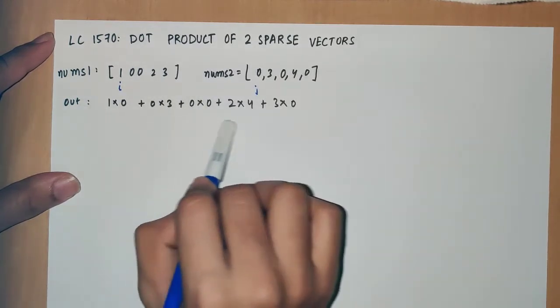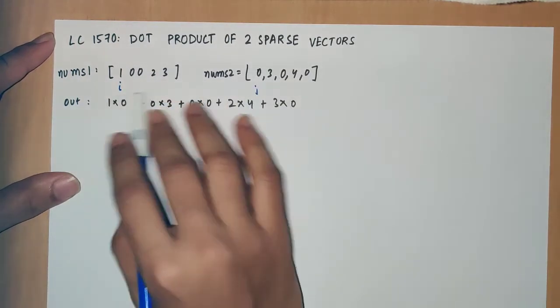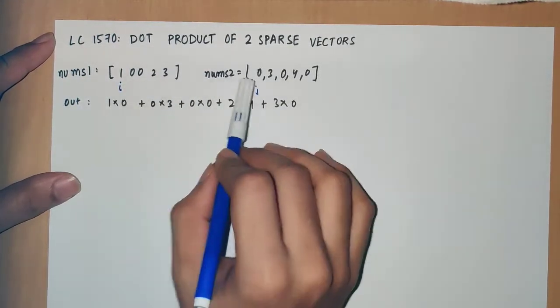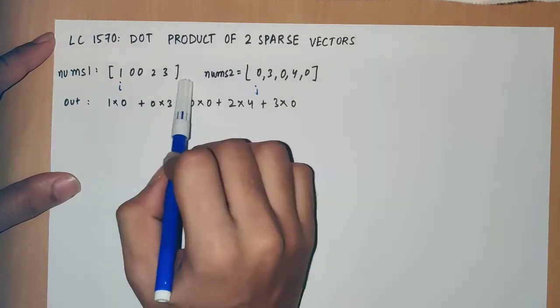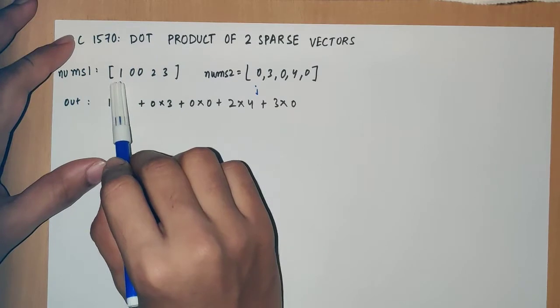Instead of storing a sparse vector in a single dimensional array and iterating over each element at a particular index, we can efficiently manage the space by storing the index of the nonzero values only.